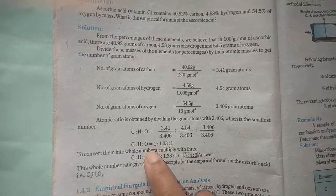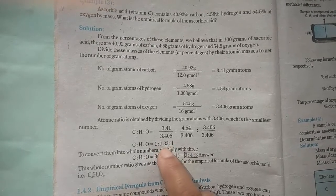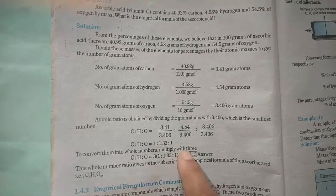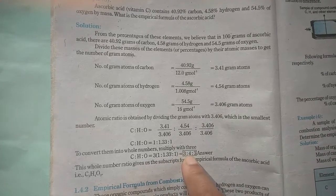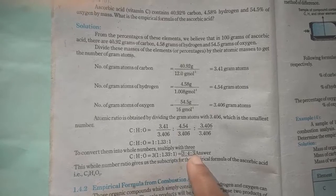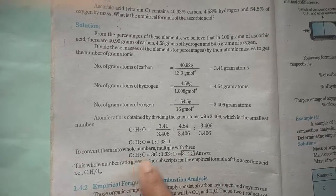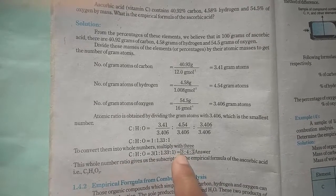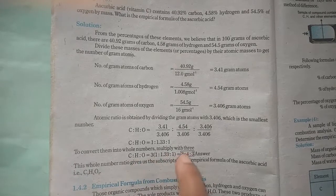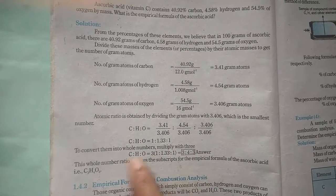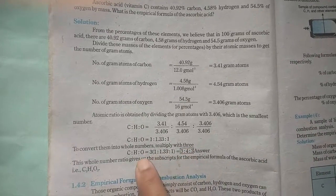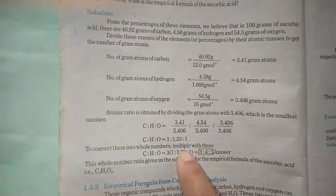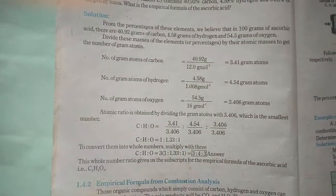Multiplying by 3 gives 3, 3.99, and 3 — where 3.99 is approximately 4. So we multiply by 3 to get three atoms of carbon, four atoms of hydrogen, and three atoms of oxygen. Therefore, the empirical formula of ascorbic acid is C₃H₄O₃. I hope the calculation of the empirical formula is now clear.